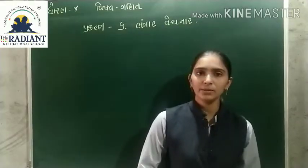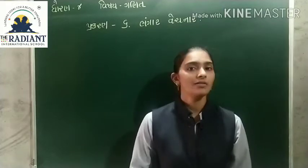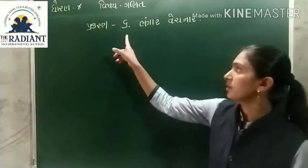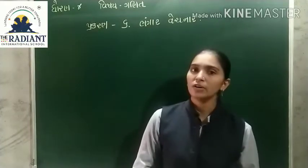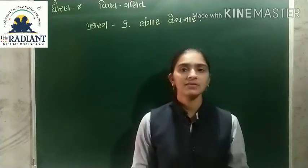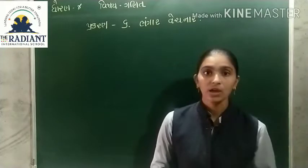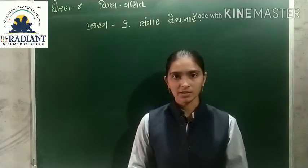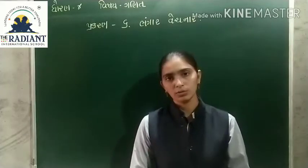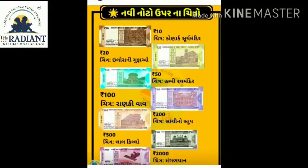Good morning Vidyarthi Mitro. આપણે 1 થી 5 શીખી ગયા, હવે આજે આપણું પ્રકરણ નંબર 6 શીખવાના છે જેનું નામ છે 'બંગાર વેચના'. તો ચાલો, આ ચલણ વિષે ટૂંકી માહિતી આપીડો, તો મિત્રો, તમે અહ્યાં આપણી નવી ચલણ નોટોના ચિત્ર જોઈ સકો છો.